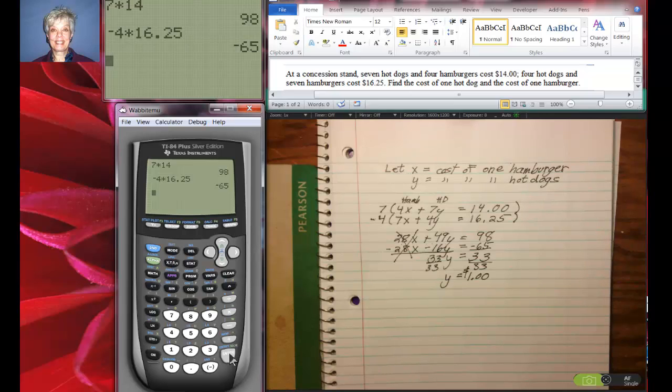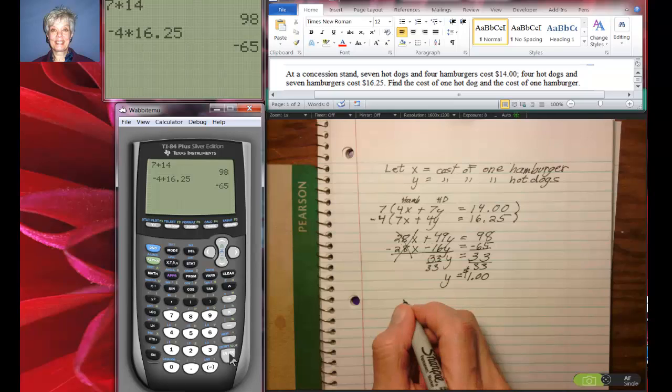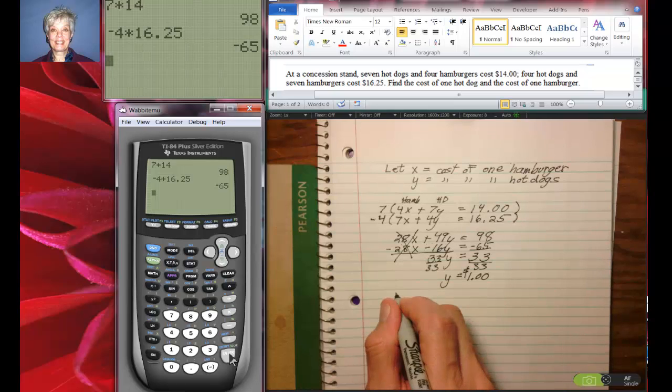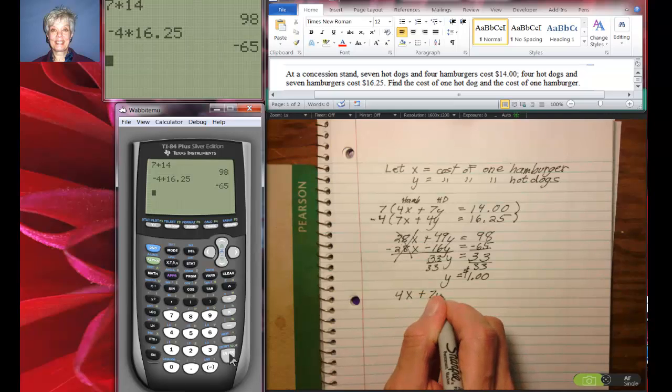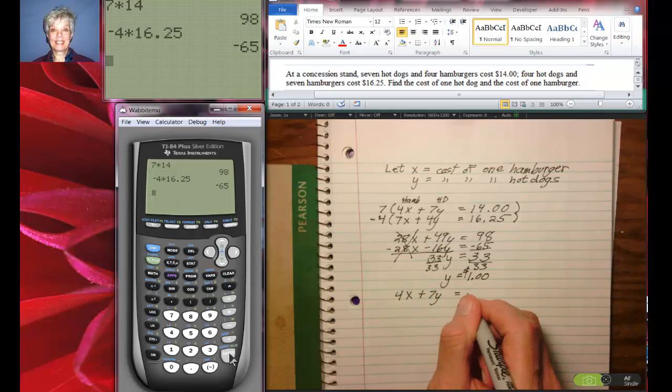If the hot dog costs $1, what does the hamburger cost? Let's put it back in one of the original equations: 4x plus 7y equals 14.